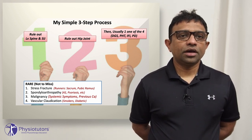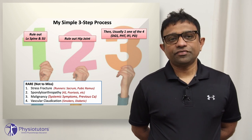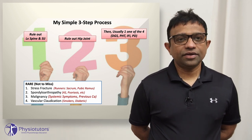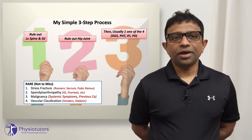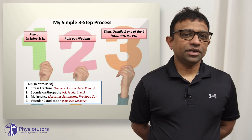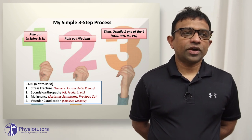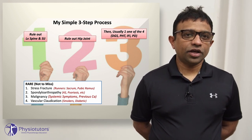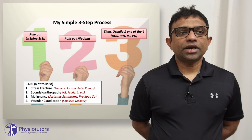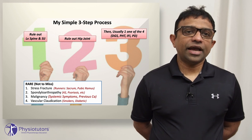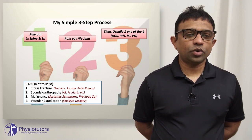People with hip OA will commonly complain of stiffness in the morning, difficulty putting on shoes and socks, limping, and difficulty on stairs. Generally they are 40 to 45 years plus. That gives you an indication that the pain could be referred from the hip as well.